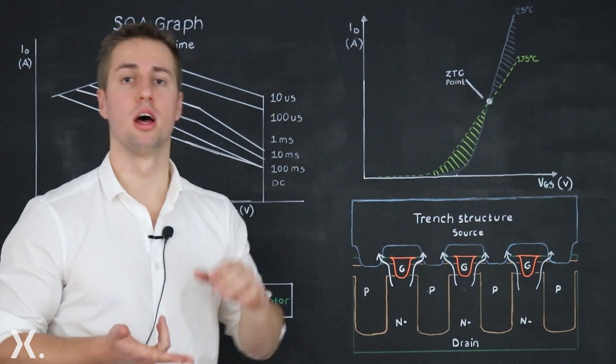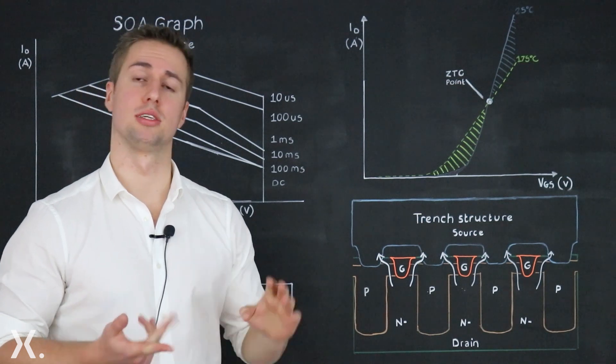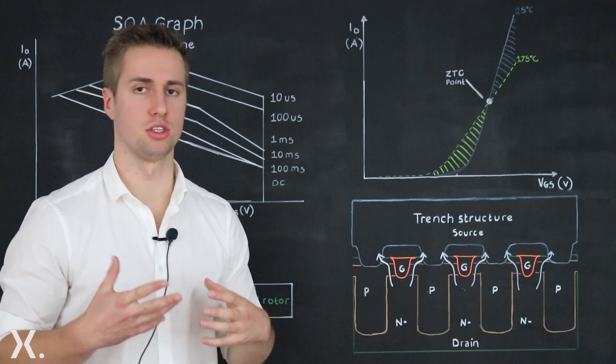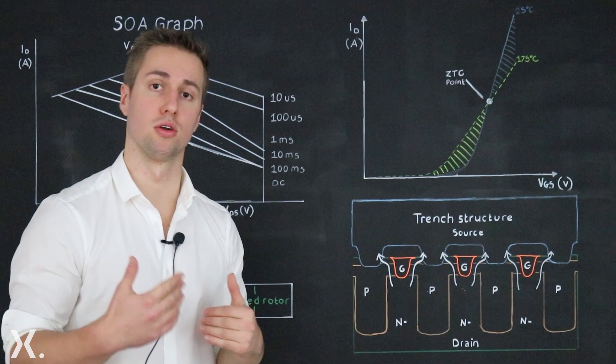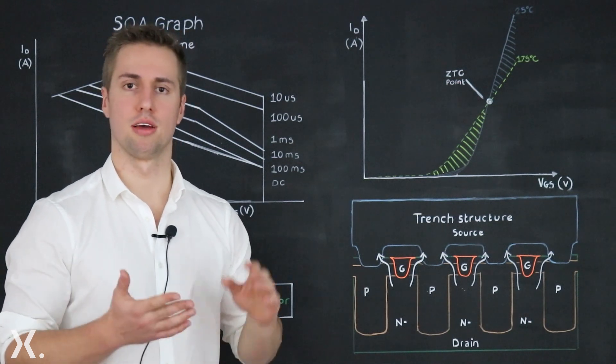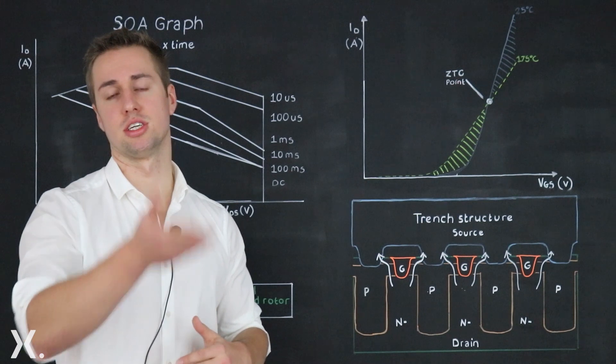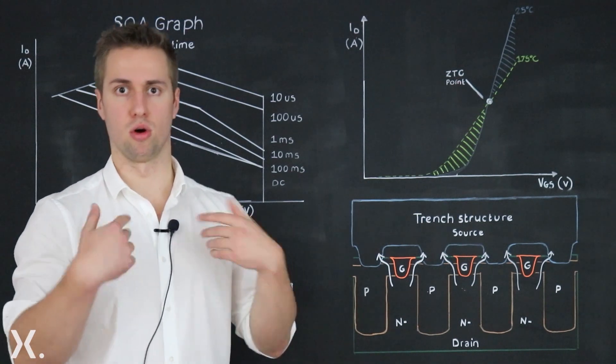As temperature increases RDS on increases. But as temperature increases the threshold voltage which decides whenever the device is turning on or off reduces. This means for the same gate source voltage if temperature increases the device turns more on.